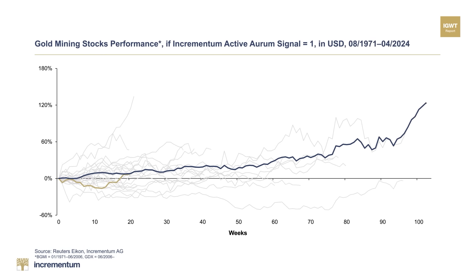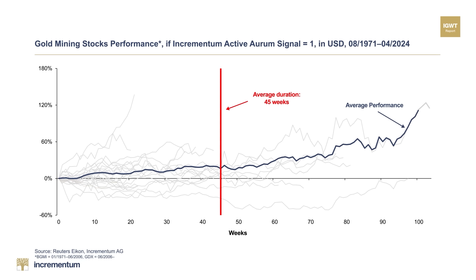Since December 2023, the signal has been recommending an offensive positioning. Compared to past periods with offensive signal characteristics, we are still in an early phase. The average performance during such phases has so far been 23% over a period of 45 weeks. Currently, however, with a performance of 7% over 21 weeks, we are still well below this average, which statistically indicates further upside potential for gold mining stocks.